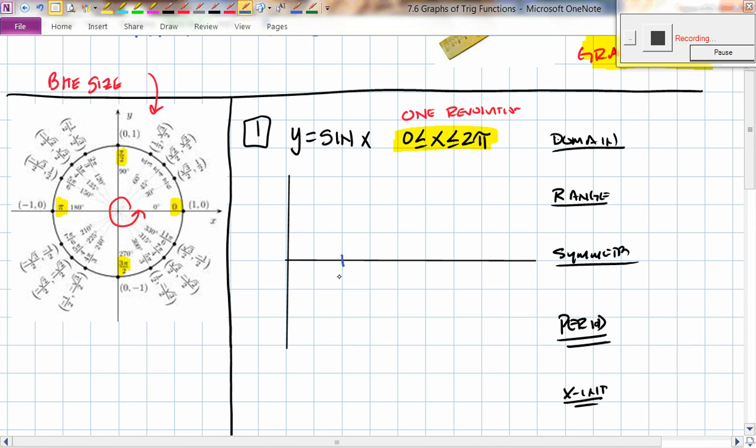I'm going to go every two points. This will be π/2. So I'm going to start at 0, π/2, π, 3π/2, and then 2π. That is one full revolution all the way around the unit circle. Does that make any sense to you?